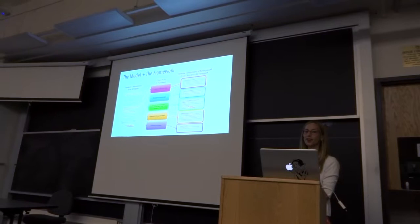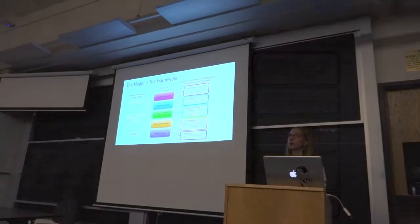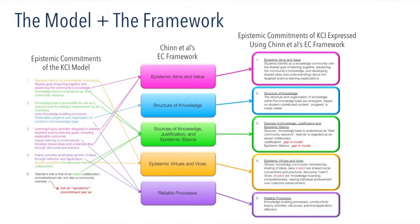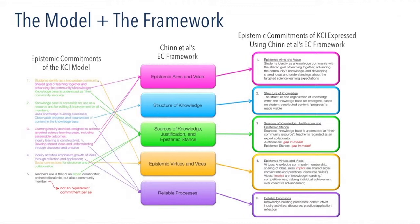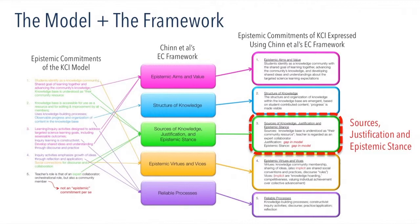The first step was to take the five epistemic commitments of the KCI model, and these were filtered using the five dimensions of Chinn's framework. Each of the five epistemic commitments of KCI were coded according to the five dimensions to produce this set of five epistemic commitments. The focus of the current paper I'm presenting today is on one of these dimensions: the sources of knowledge, justification of knowledge, and epistemic stance.